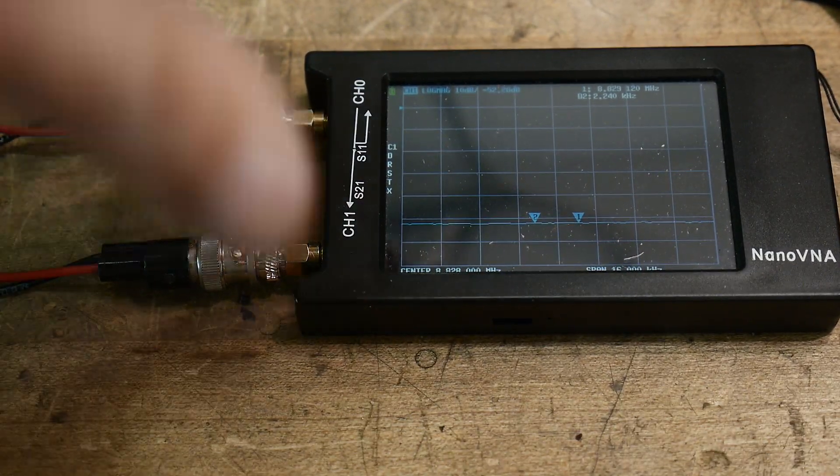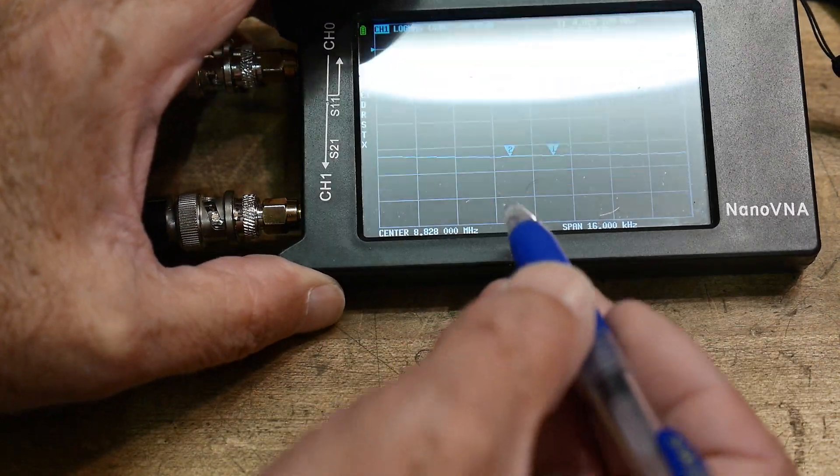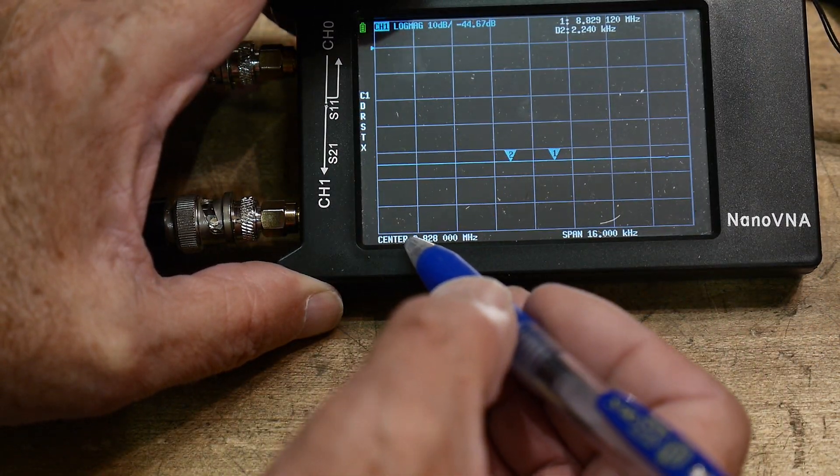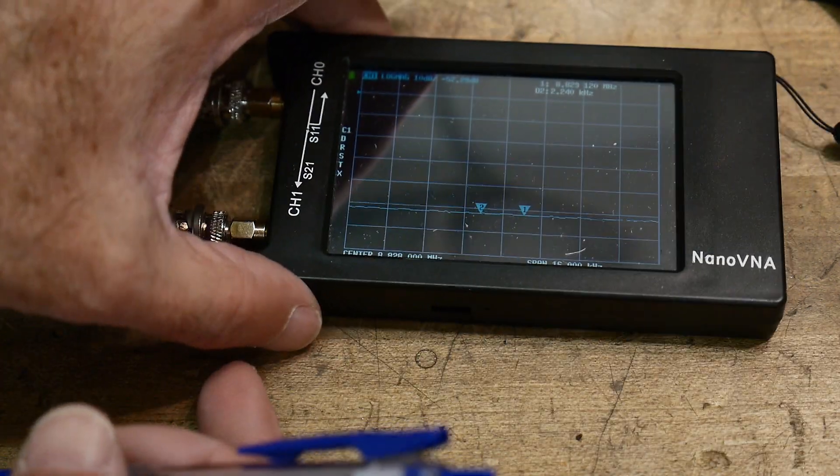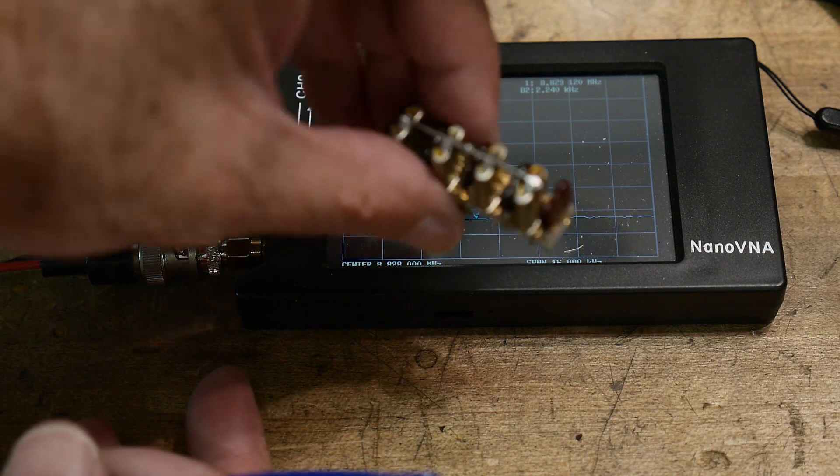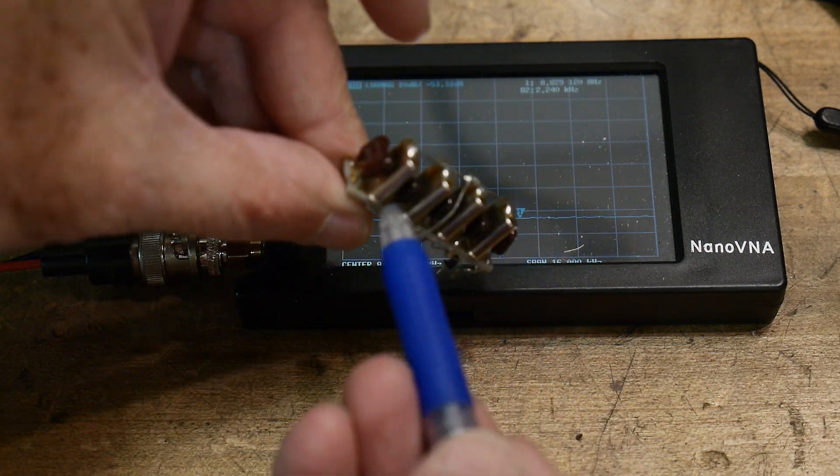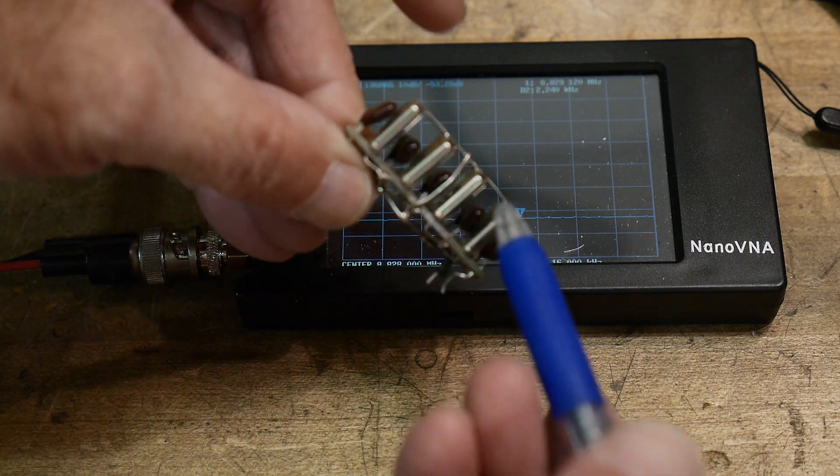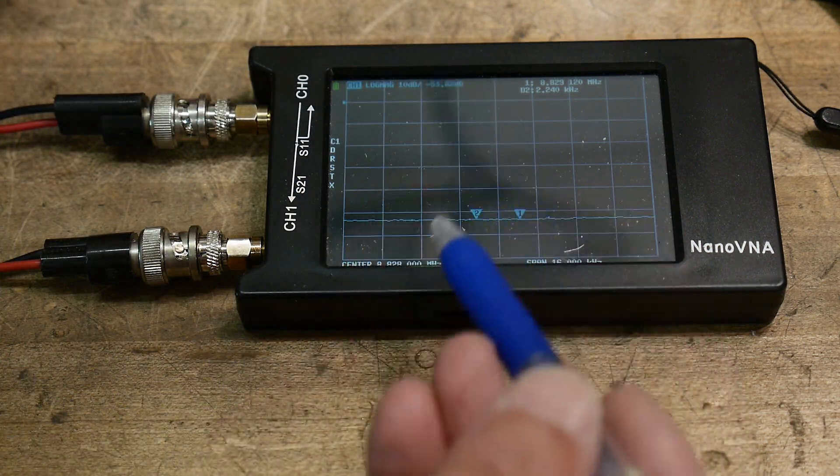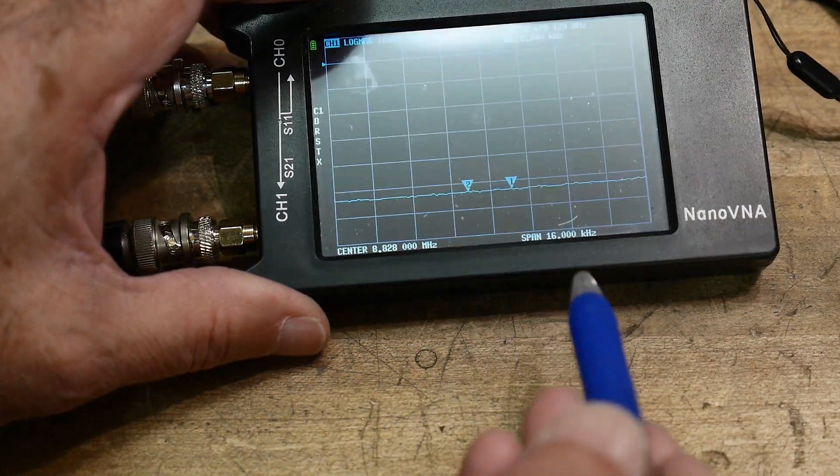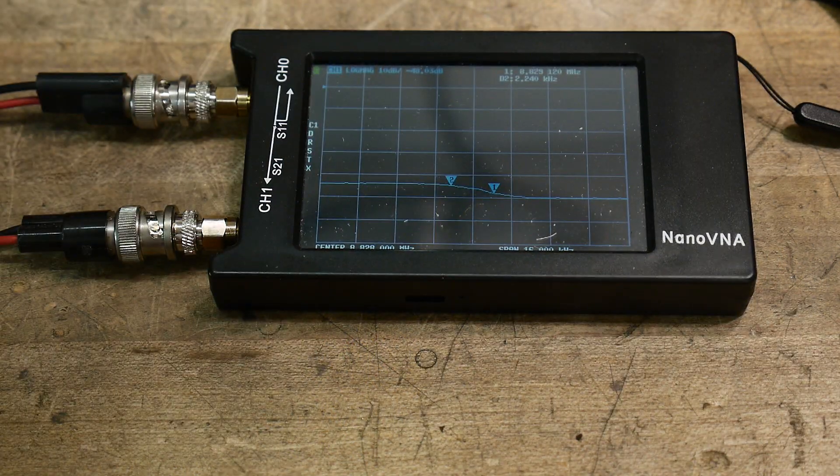So we are going to set up our conditions that we require. I have it set to center of 8.828. That's a strange frequency. Why do I have that? Well, that's because I'm going to be investigating this filter. It's a homebrew filter with crystals and five capacitors. So I'm going to set up the span of 16 kHz and I've got my center frequency. So let's calibrate.